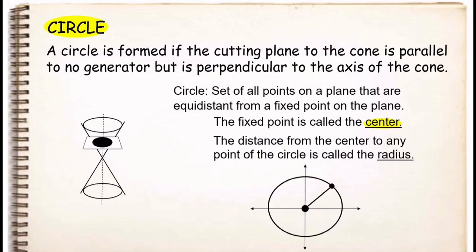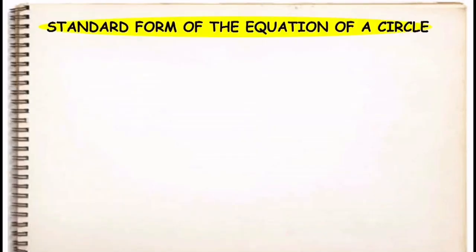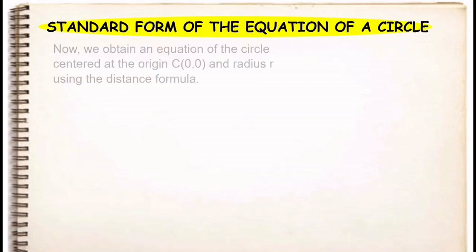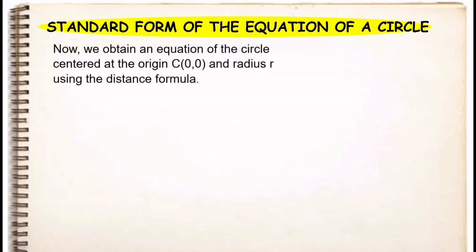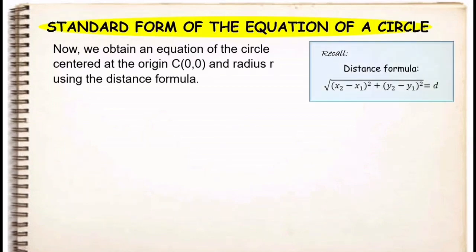When writing the equation of a circle, we write it either in standard form or general form. First, let's discuss the standard form of the equation of a circle. We obtain an equation of the circle centered at the origin, (0, 0), and radius r using the distance formula. Recall that the distance formula is equal to the square root of (x₂ minus x₁)² plus (y₂ minus y₁)².